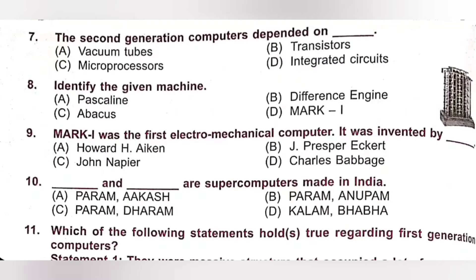Question 9: Mark 1 was the first electromechanical computer. It was invented by — A. Howard H. Aiken, B. J. Presper Eckert, C. John Napier, D. Charles Babbage. Mark 1 was the first electromechanical computer and it was invented by Howard H. Aiken. Option A is the correct answer.